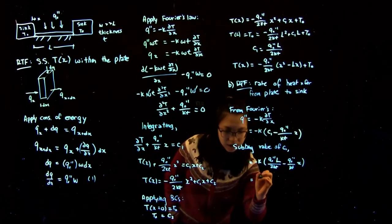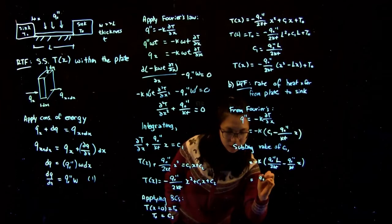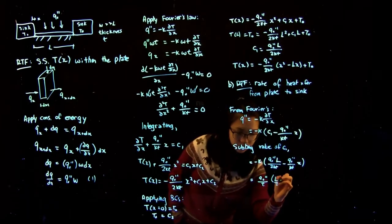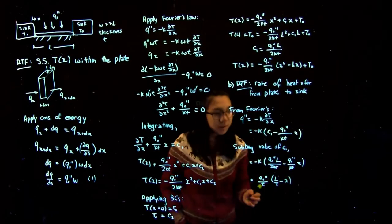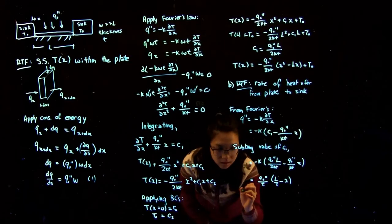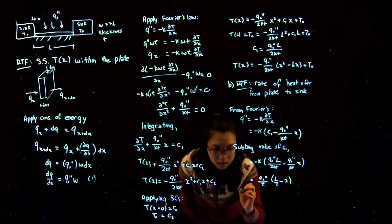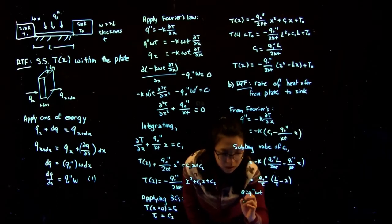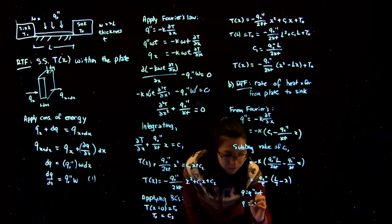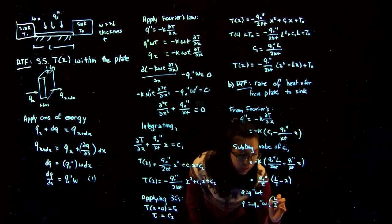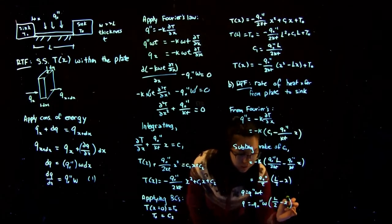Simplifying gives flux equals Q0 over t times (L/2 minus x). Since we also know that Q equals flux times Wt, we know that Q equals minus Q0 times W times (L/2 minus x).